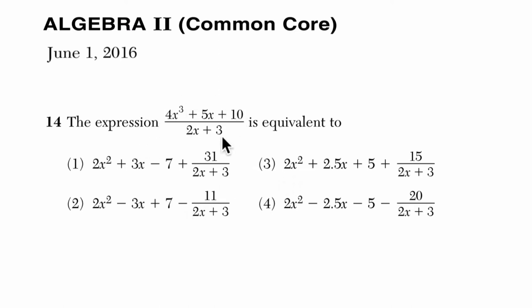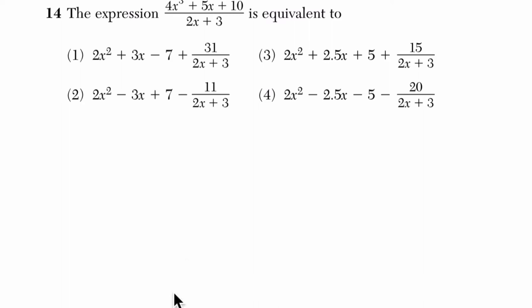This is really a polynomial long division problem because there's no common way or way to factor the numerator and denominator and cancel things out. We are literally going to divide this cubic trinomial, 4x³ plus 5x plus 10, by 2x plus 3, and we're going to use what we know about long division to do that.